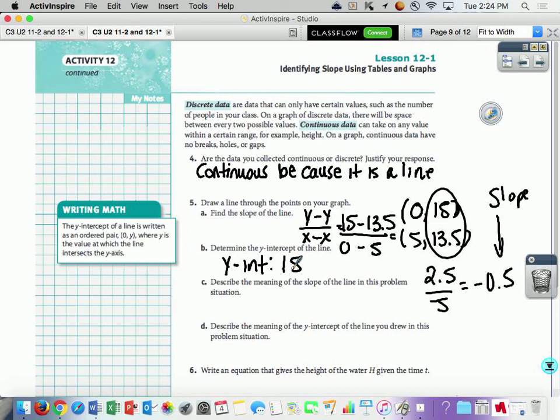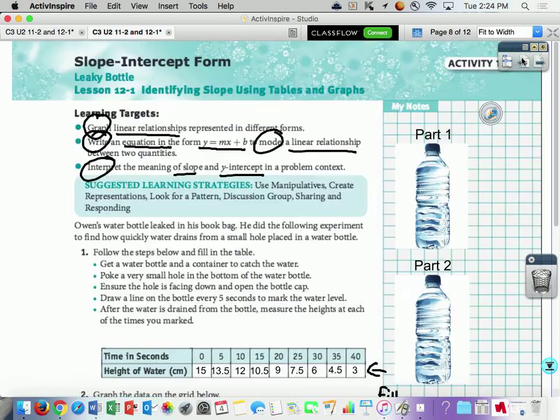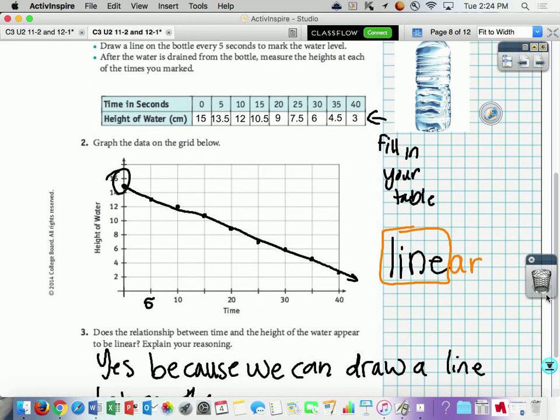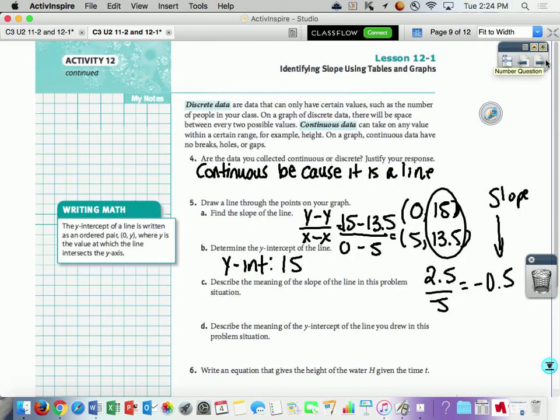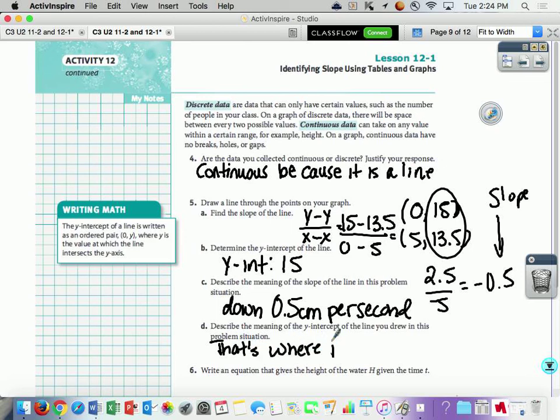Okay, so let me describe the meaning of the slope of the line in this problem. Okay, the slope of the line means your height of your water per your time. And I think your time is in seconds. So it's height per second. So you're going down 0.5 centimeters per second. Describe the meaning of the y-intercept of the line you drew in this problem. That's where you start, where it started.